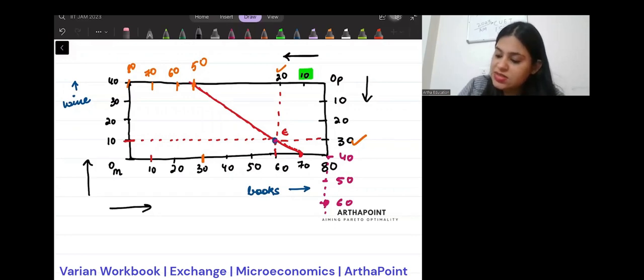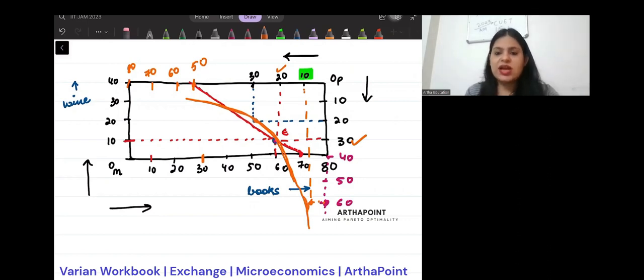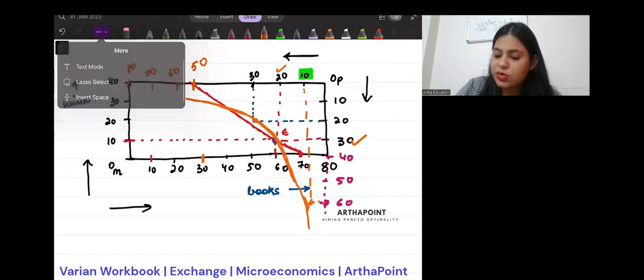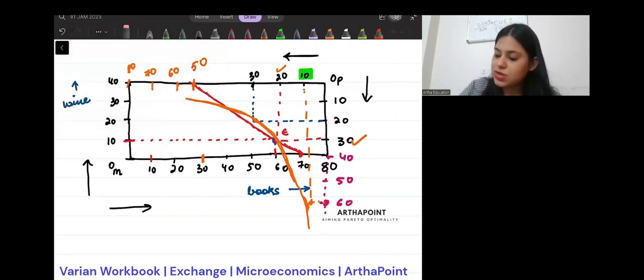Then, note that 30 and 20 also give him the same utility as 20 and 30. This point should also give him the same utility. We know that these are ICs which are convex. There must be one point which should pass through 10 and 60. But of course, this is lying outside my origin. So, I am not interested in that point.